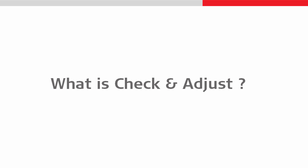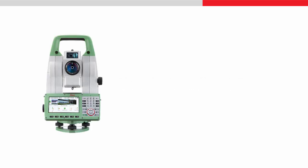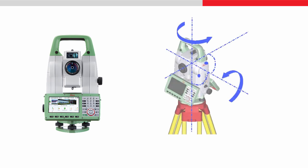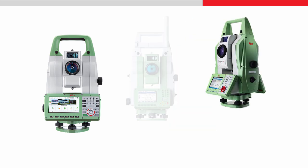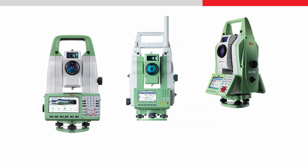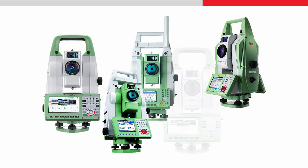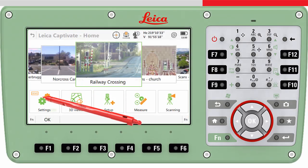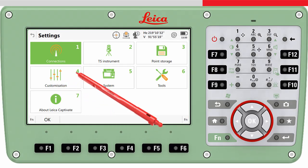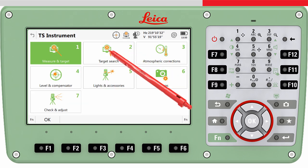A total station has to fulfil specific requirements. Unconsidered misalignments of the rotational axis can lead to wrong results. The check and adjust tool can be found in all currently available Leica total stations and multi-stations, in Settings, TS Instruments, and Check and Adjust.